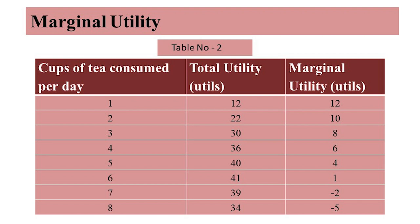If the consumer increases consumption from 2 to 3 cups per day, total utility increases from 22 to 30 utils. The extra utility from the third cup equals 8 utils, so the marginal utility of the third cup is 8 utils. As seen in table number 2, beyond 6 cups the total utility declines and marginal utility becomes negative — extra cups beyond 6 produce disutility for the consumer.